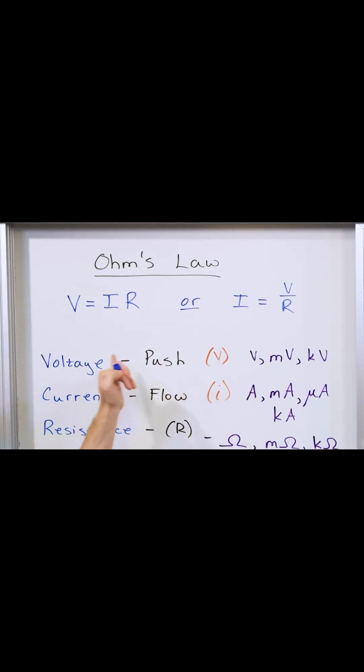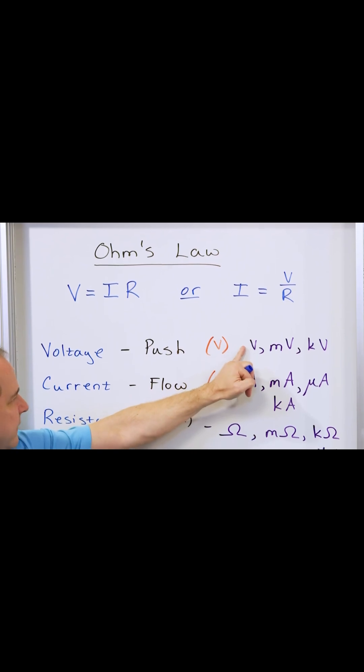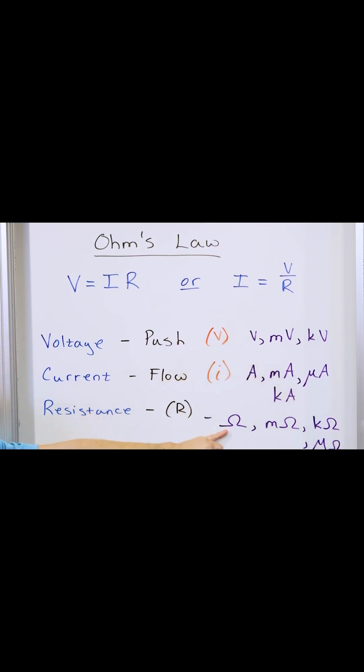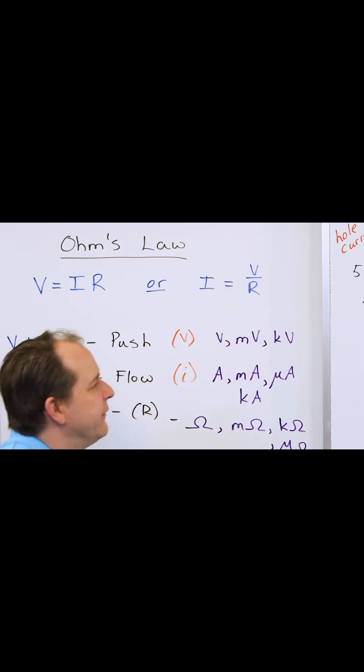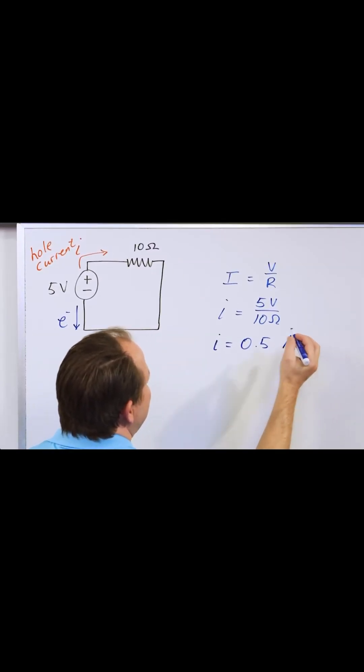Well, we already said the voltage is in volts. The ohms, the base unit is omega and ohms. And so amperes is going to be the base unit. So amps.